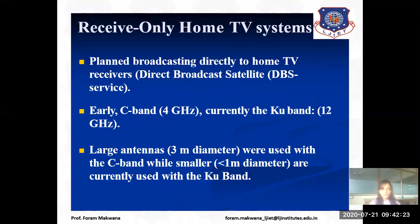First, we are focusing on the receive-only home TV system. The best example is direct broadcast satellite (DBS) service, where a television signal is broadcast directly to the home. Earlier we used the C band, but nowadays we are using the Ku band.